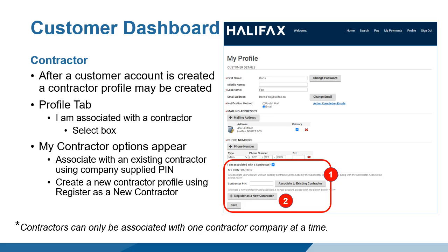A contractor profile can be set up in two ways. One, contractors can associate to an existing company using a company-issued PIN. Associating to an existing company would be used, for example, if you are an employee or are subcontracting through the existing company. You can only associate with one company as a contractor at a time.